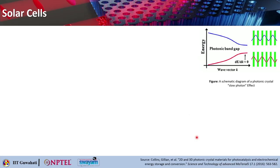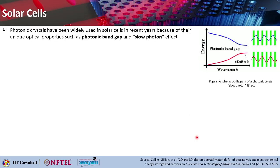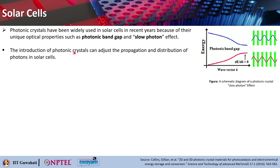Now let us look into different applications of photonic crystal slabs. Photonic crystal slabs have many applications in solar cells because of two unique properties: photonic band gap and the slow photon effect. The introduction of photonic crystals can adjust the propagation and distribution of photons in solar cells. The slow photon effect is shown in the E-K diagram, which shows the photonic band gap.